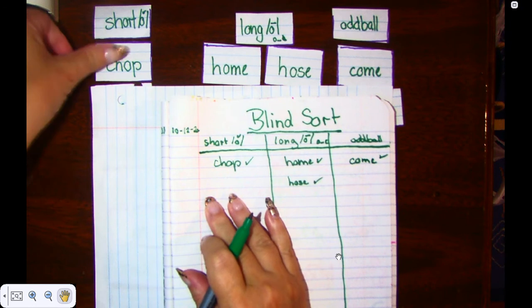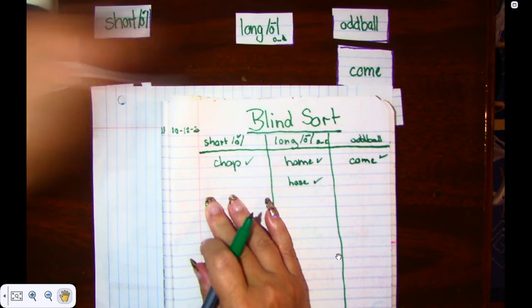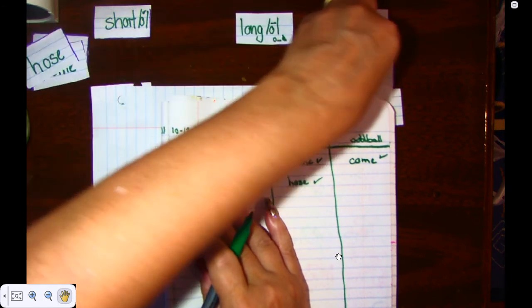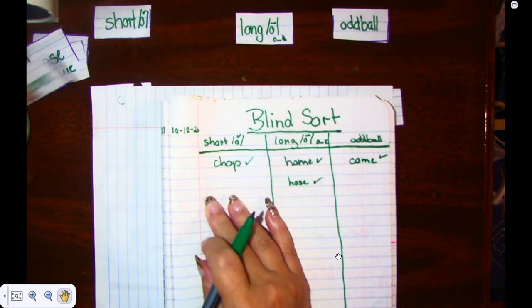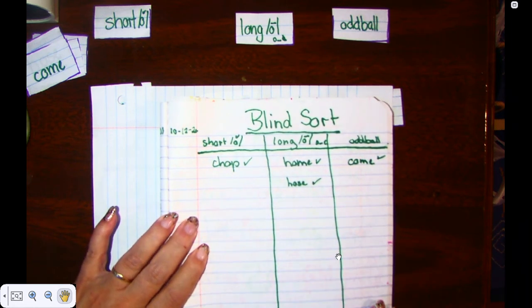So the way I would do that is I would move these over because I already have these, right? No matter where in the sort they are, once I unveiled it, I already did these. And then I have to write down all the ones that I remember.